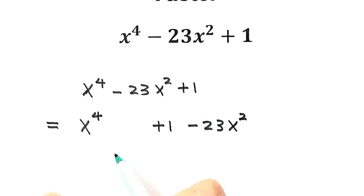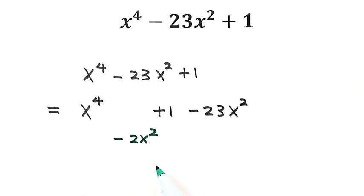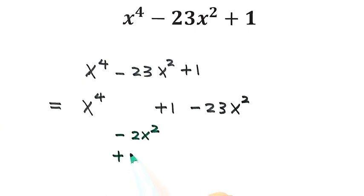One is minus 2x², another is plus 2x². Which one to choose? If we use minus 2x² here, then here will be plus 2x². This will combine together to give negative 21x². But 21 is not a perfect square, so this does not work.